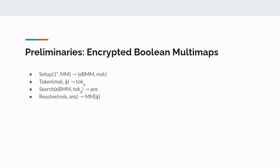We now define the notion of an encrypted boolean multi-map, which is a structured encryption for boolean multi-maps. It consists of four algorithms: setup, token, search, and resolve. The setup algorithm is executed by the client and takes as input the security parameter and the boolean multi-map, and outputs an encrypted boolean multi-map and a master secret key. The token generation algorithm takes as input the master secret key and a boolean formula, and outputs a token sent to the server. The search algorithm is executed by the server and outputs an encrypted answer sent back to the client. Finally, the resolve algorithm takes the master secret key and the server's answer and outputs the plaintext elements in the multi-map.